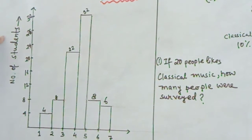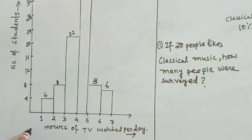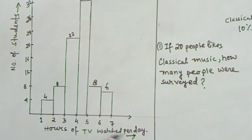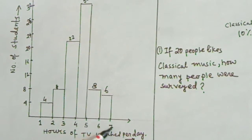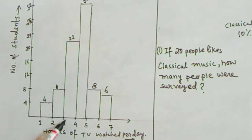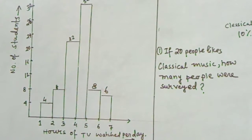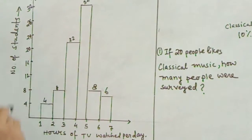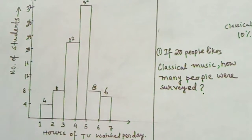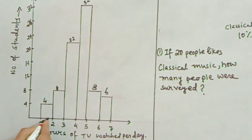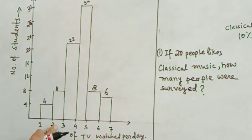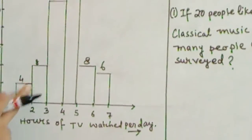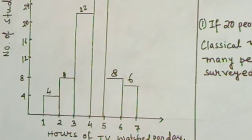Number of students is on the vertical axis and hours of TV watched per day on the horizontal axis: 1 hour, 2 hour, 3 hour, 4 hour, 5 hour, 6 hour. So 1 to 2, 2 to 3, 3 to 4, 4 to 5, 5 to 6, 6 to 7. Number of students are given here. You have to read the histogram. It is a histogram because the class intervals are interconnected. There is a common wall in this bar graph, so it is a histogram.